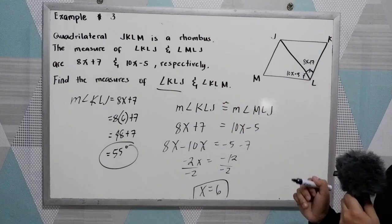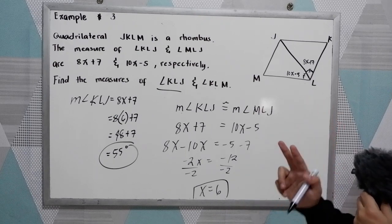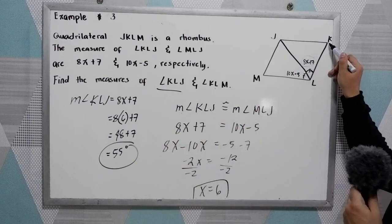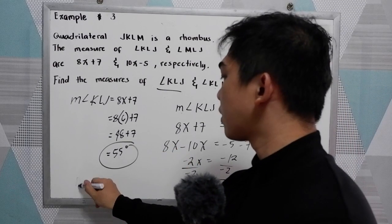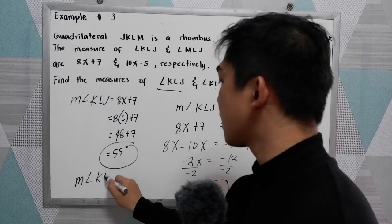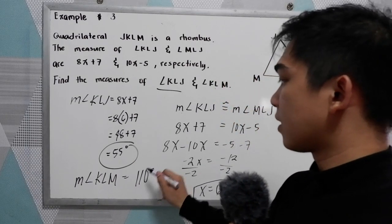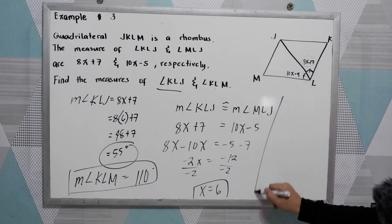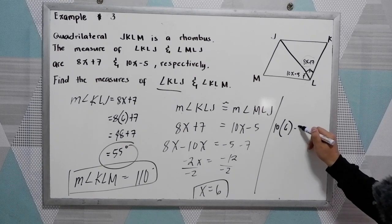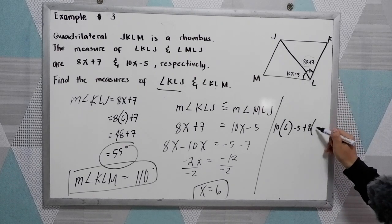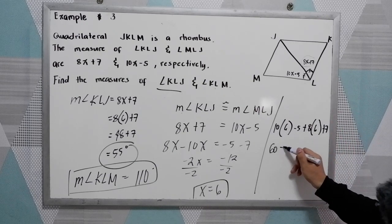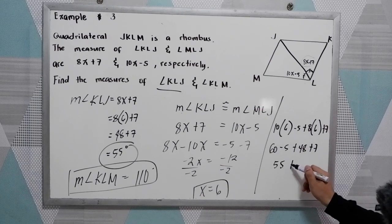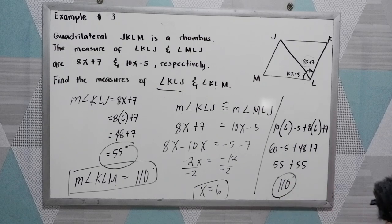Now for KLM, there are two ways. The easiest is to multiply the measure of KLJ by 2. So the measure of angle KLM is 55 times 2, that is 110 degrees. Or, substituting the given values: 10 times 6 minus 5 plus 8 times 6 plus 7 equals 55 plus 55, which is 110 degrees. They are the same.